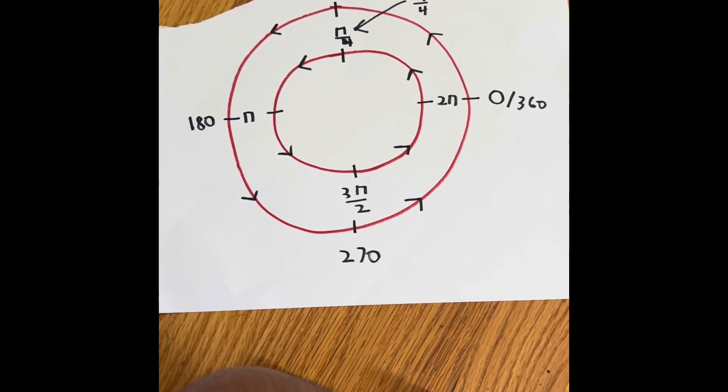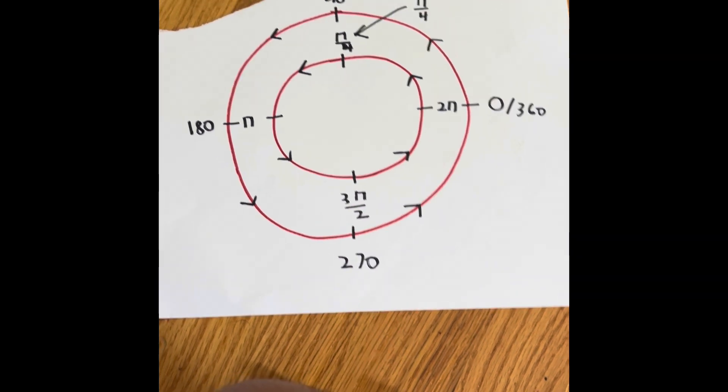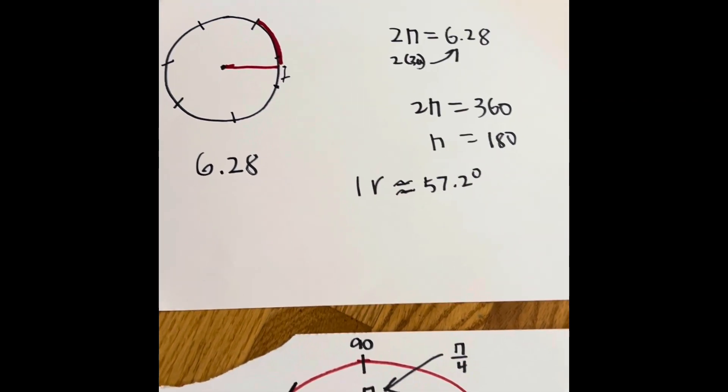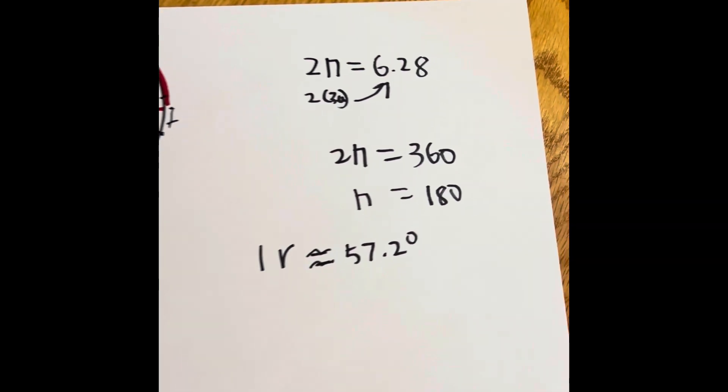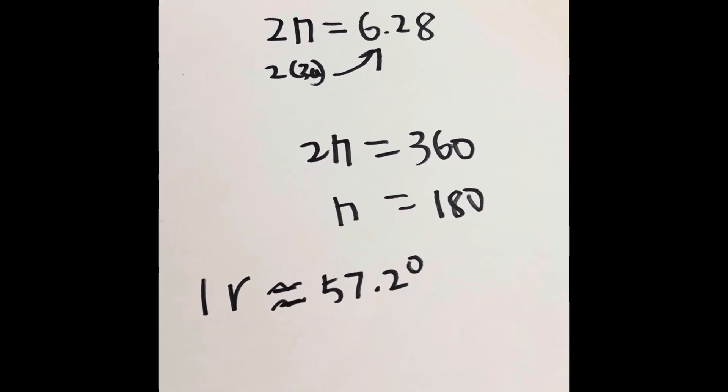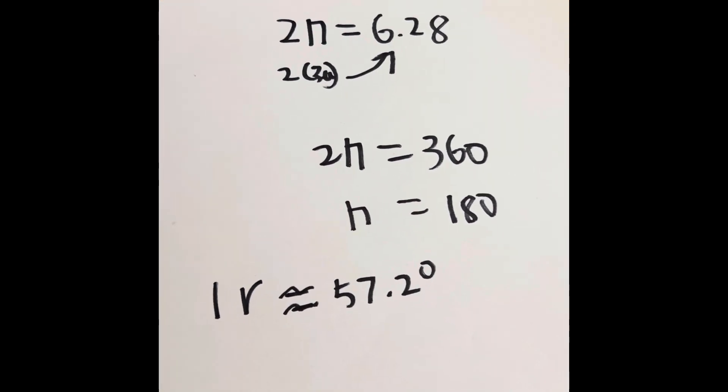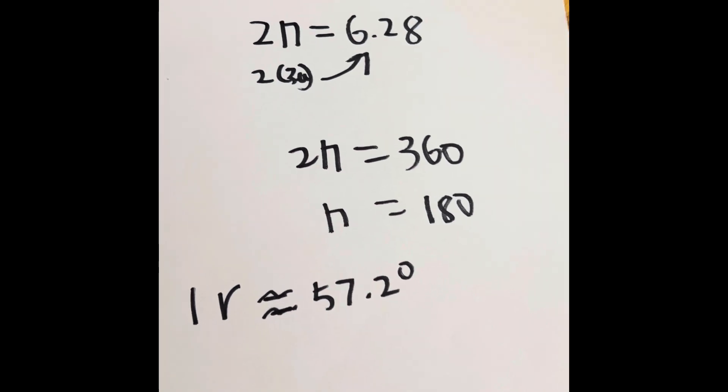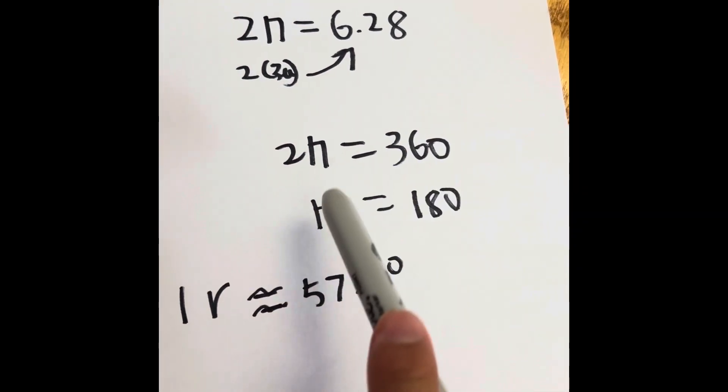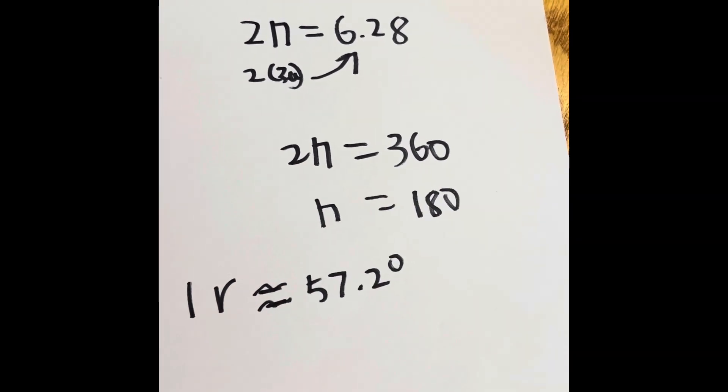In the past videos, we've been learning all about the unit circle and what radians are. We've also understood that the special formula is 2π equals 360 degrees, and π equals 180 degrees.